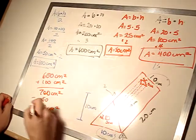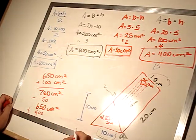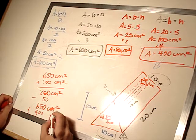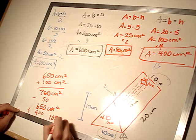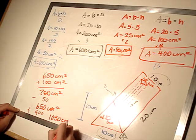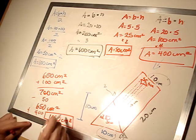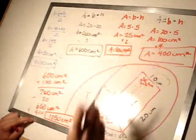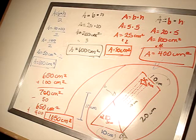And now, we have to add in our 400. So, we end up with 1,500 centimeters squared for the surface area, or the total area of this entire prism, triangular prism. Alright.